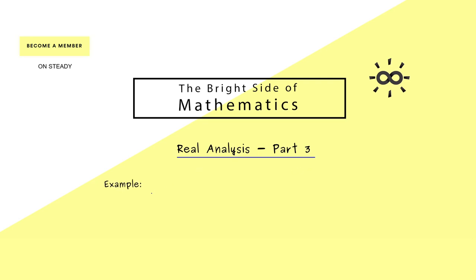For this I think a good starting point would be to consider an example. Here I have the sequence a_n which is given by (-1)^n. This is an example we had in the last video but now we will show that this sequence is not convergent, or in other words we prove that the sequence is divergent.